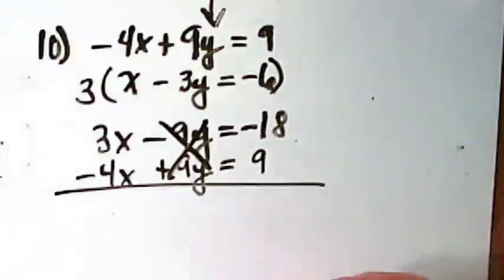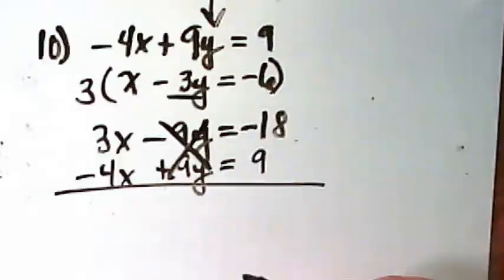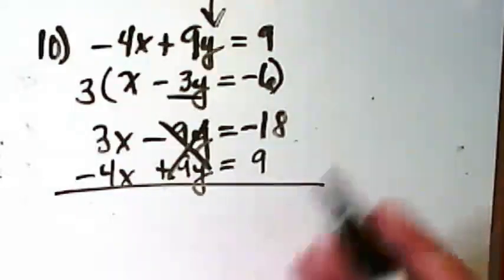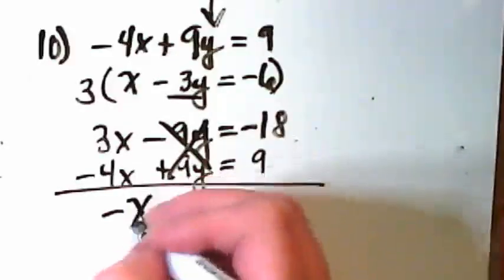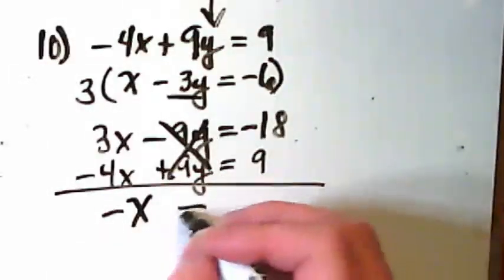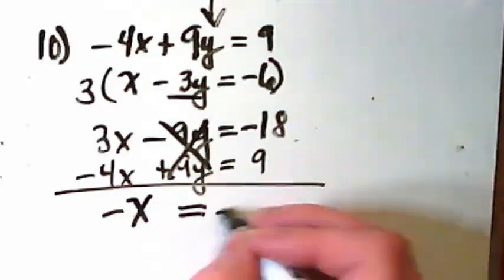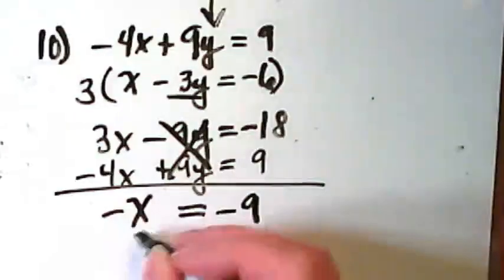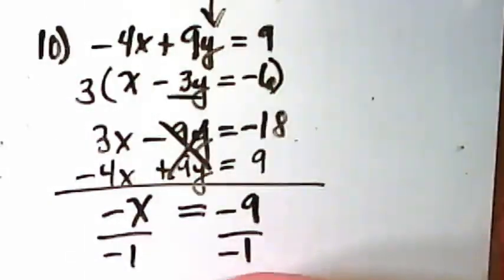This middle term is eliminated now because I changed this negative 3y to a negative 9y. 3x and negative 4x is going to give me a negative x. Negative 18 and positive 9 is going to give me negative 9. I divide by negative 1 and I get x is equal to negative 9.